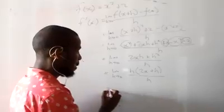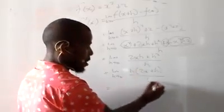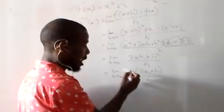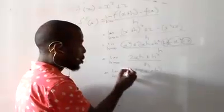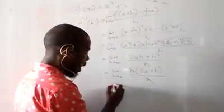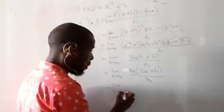Now, you see from here, there's an h at the top and an h at the bottom. So the h cancels. You are left with lim h→0, 2x + h.